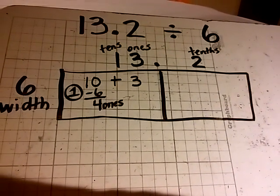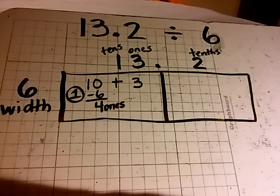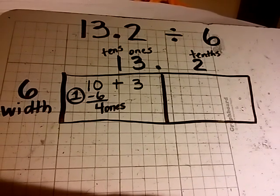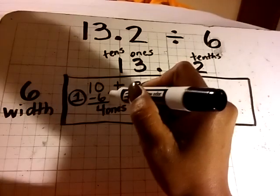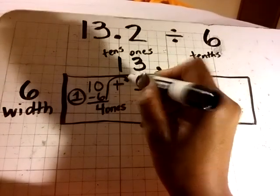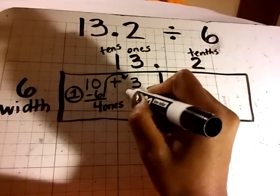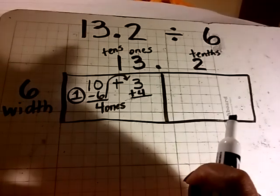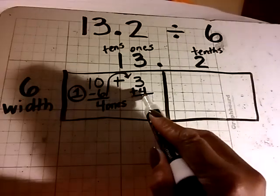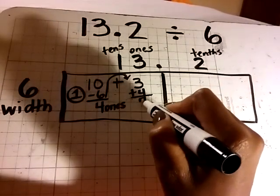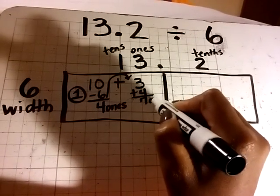Notice that I am constantly using my place value terminology. I can then regroup the 4 ones with the 3 ones. 3 ones plus 4 ones is 7 ones.